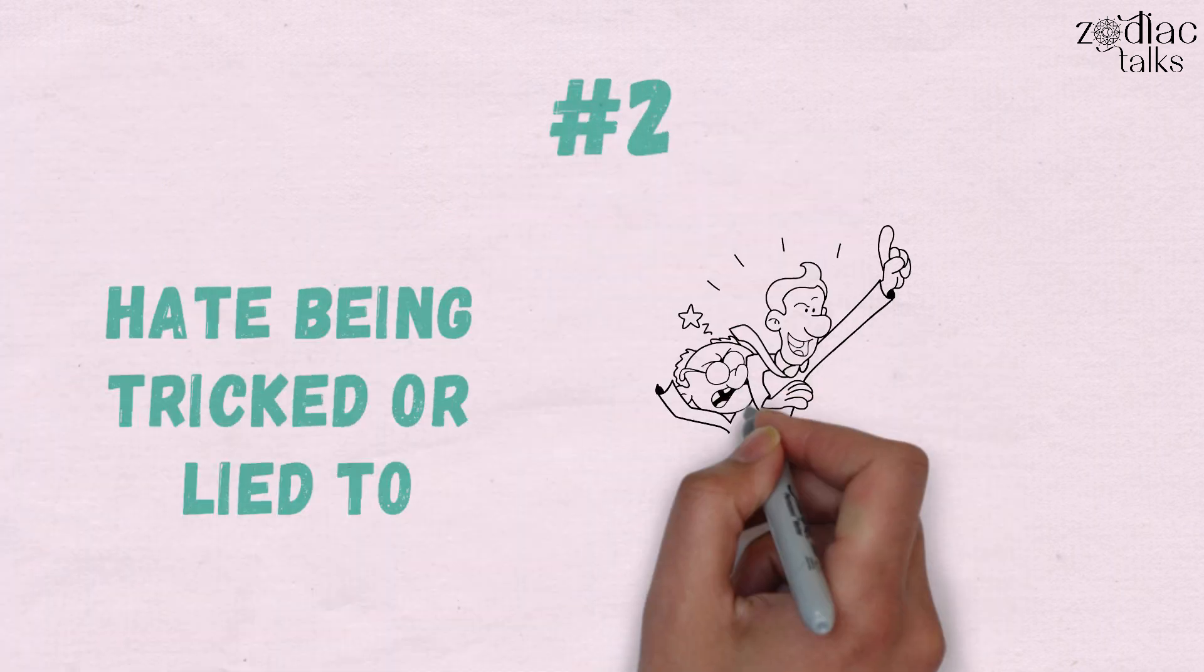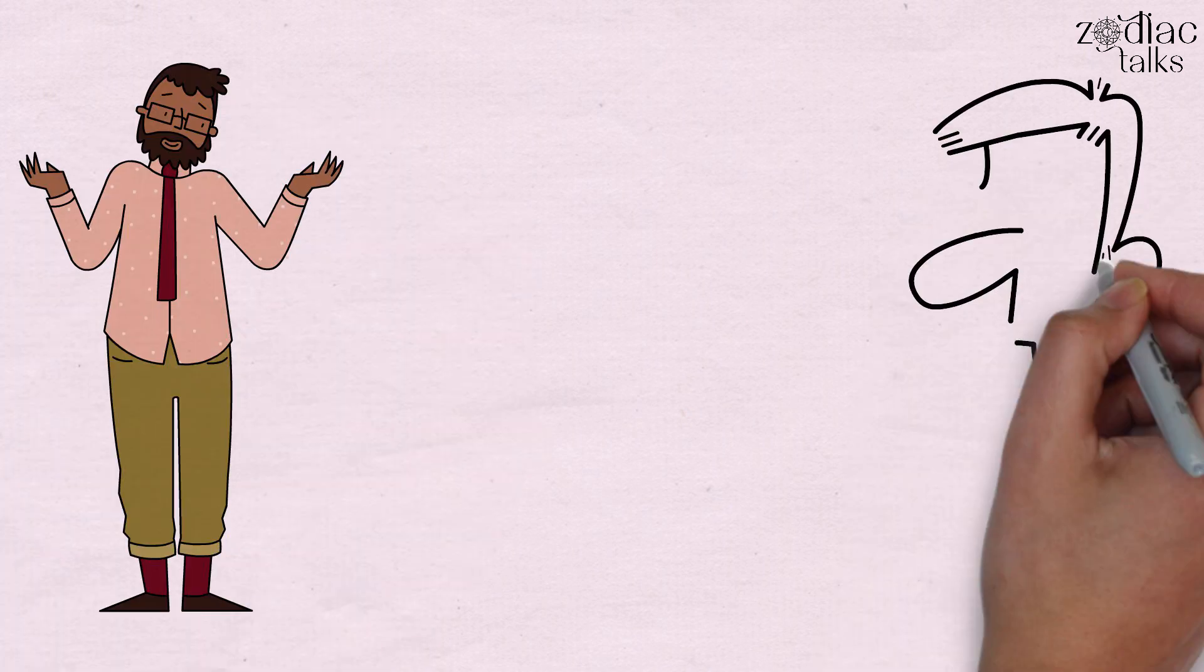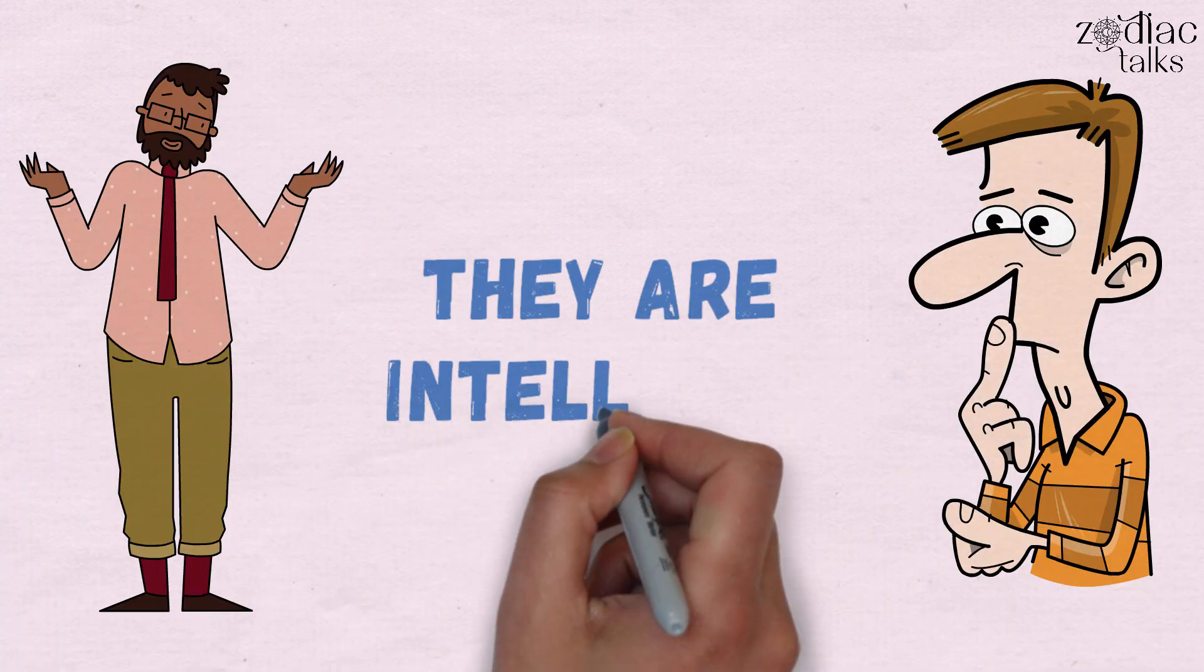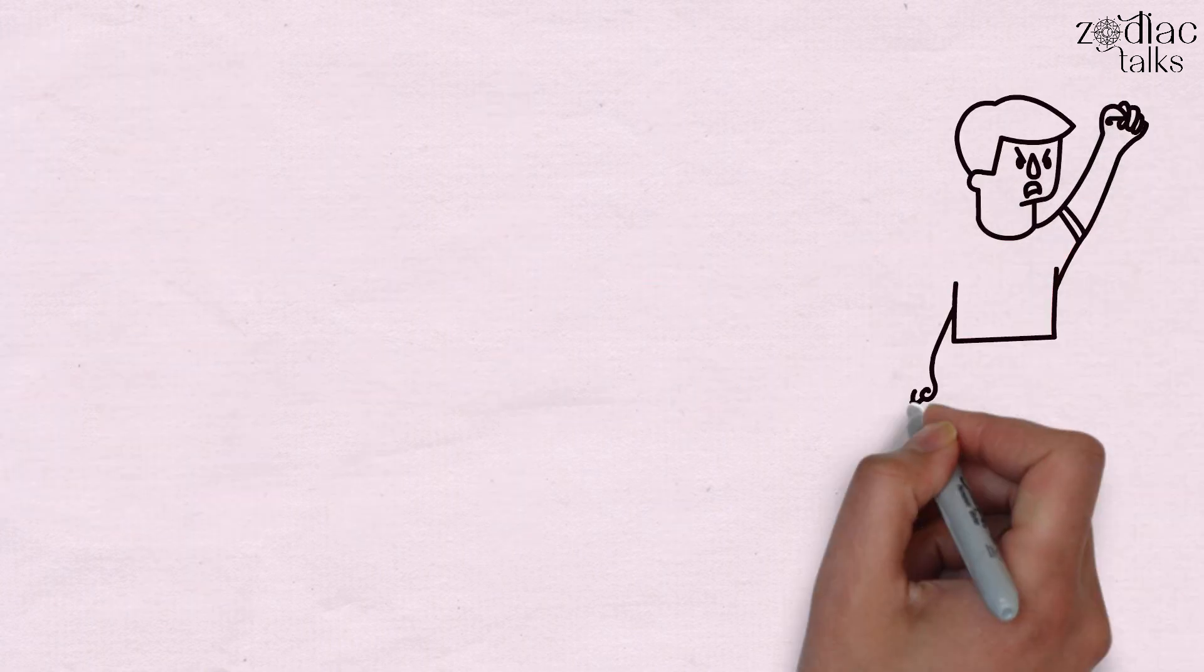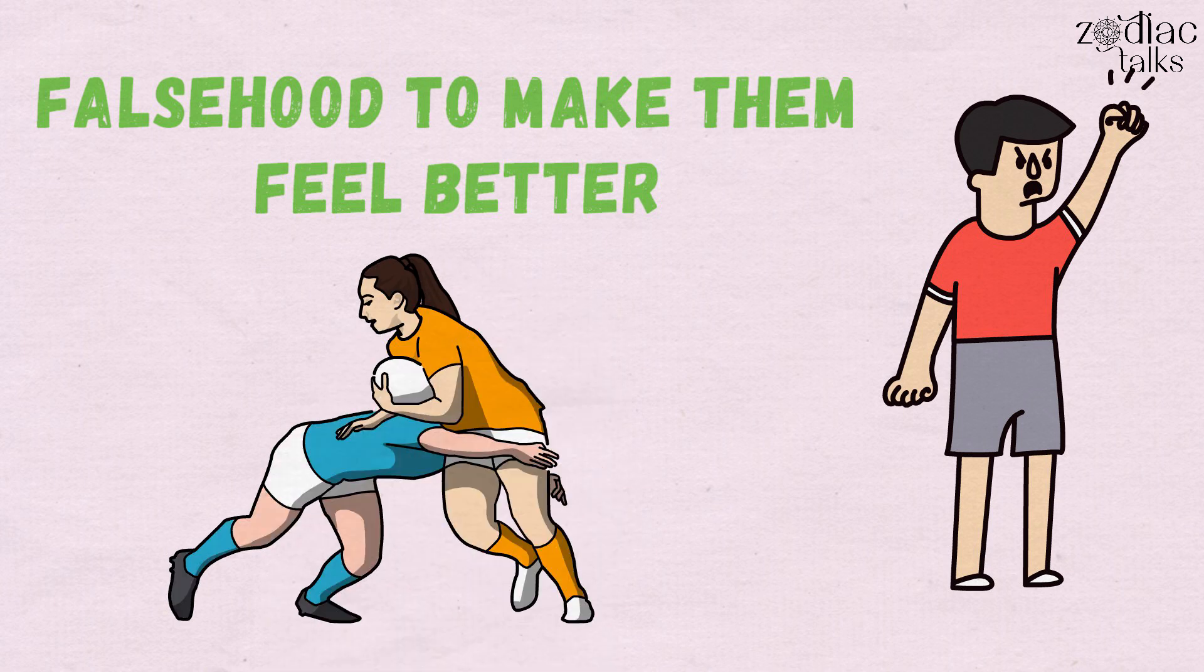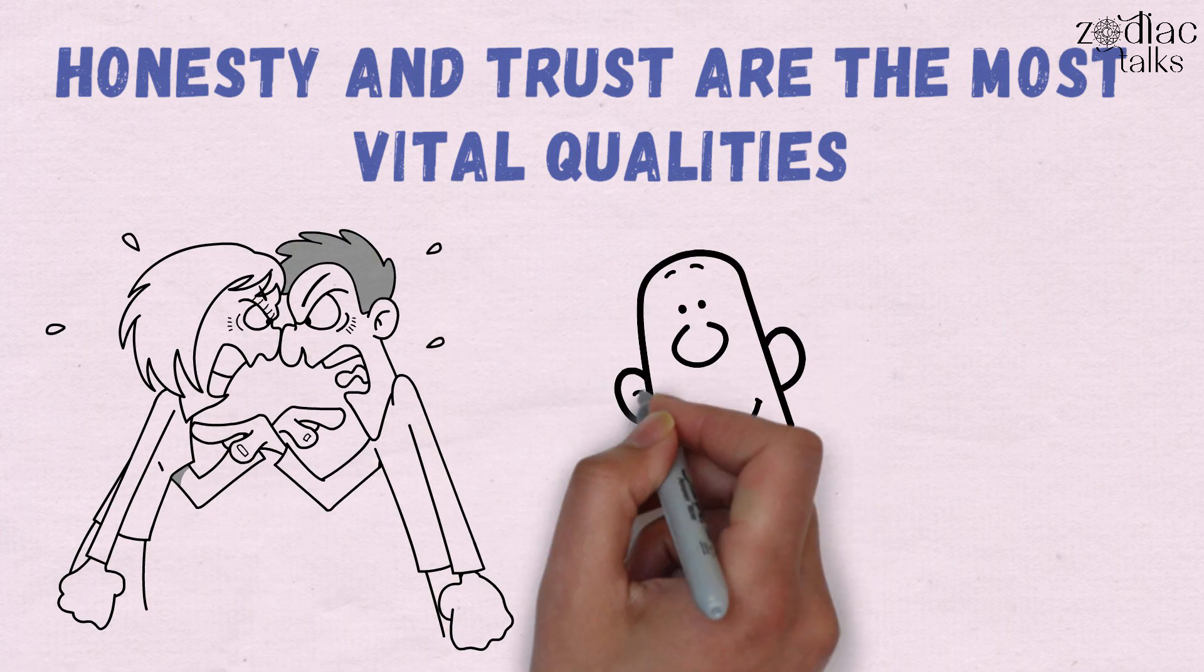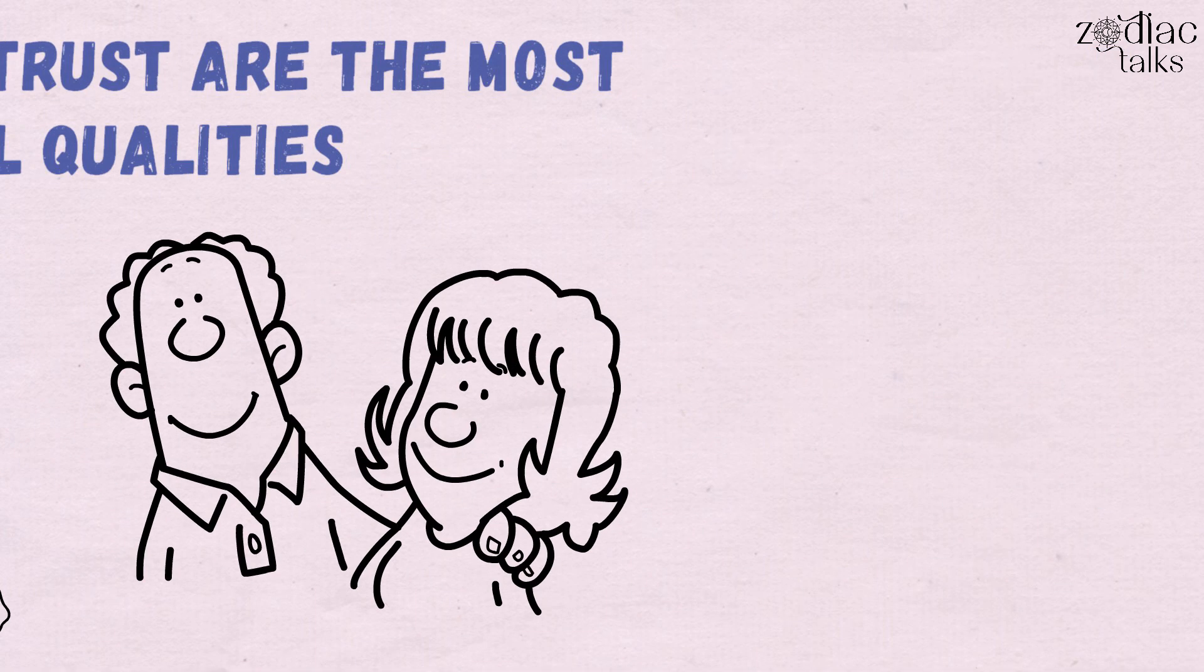2. They Hate Being Tricked or Lied To. They despise those who make them feel stupid because they believe they're intelligent. They'd be furious if someone told them a falsehood to make them feel better because they're capable of dealing with almost anything. They feel that honesty and trust are the most vital qualities in a relationship and that once those are shattered, the relationship is nearly impossible to mend.